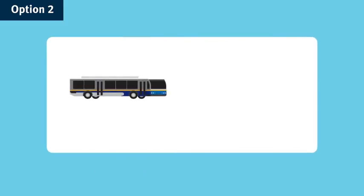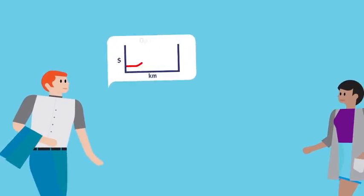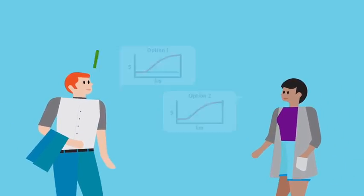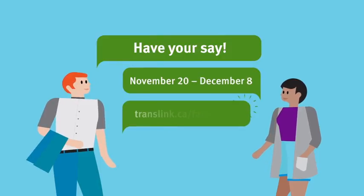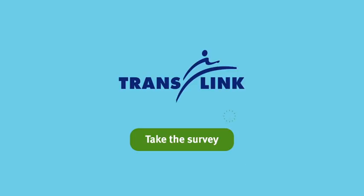Fares would decrease for all trips less than five kilometres, and any SkyTrain trip that just crosses a zone boundary by one or two stations. So which option do you think works best? Watch the rest of our videos to learn about the other components in Phase 3 of TransLink's Transit Fare Review. Then take the survey and help us create a new fare structure that works better for more people.